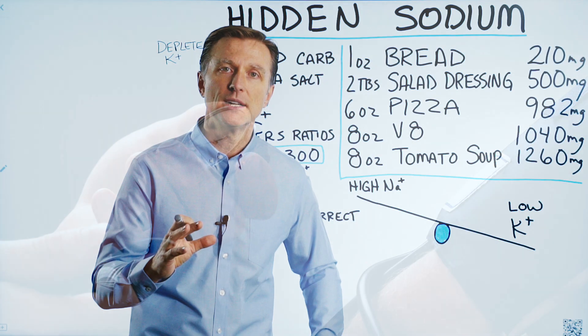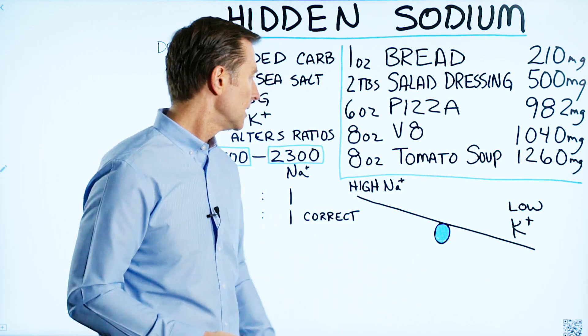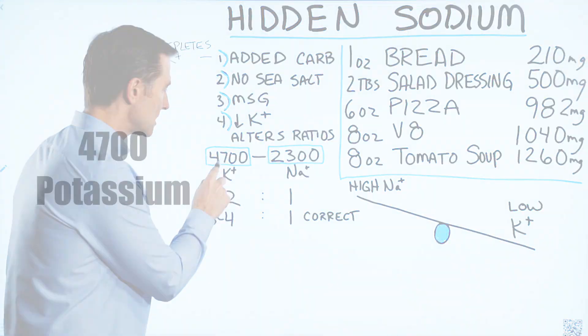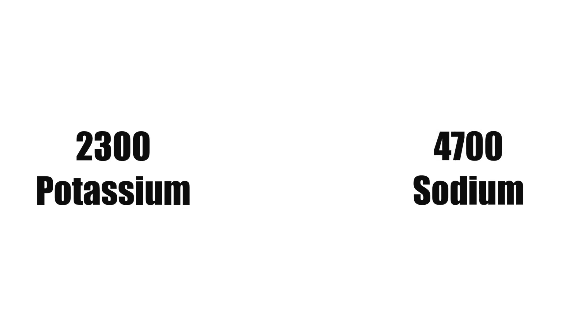What's even more important than these two minerals is the ratio they come in. Normally, you would need 4,700 milligrams for potassium and 2,300 for sodium. An average person has them flipped, and that's what's going to put them in trouble.